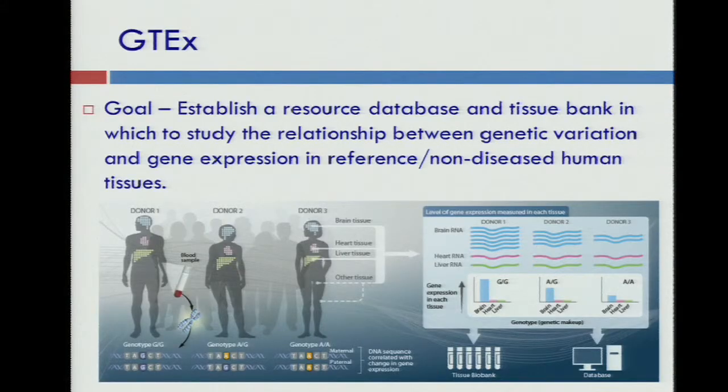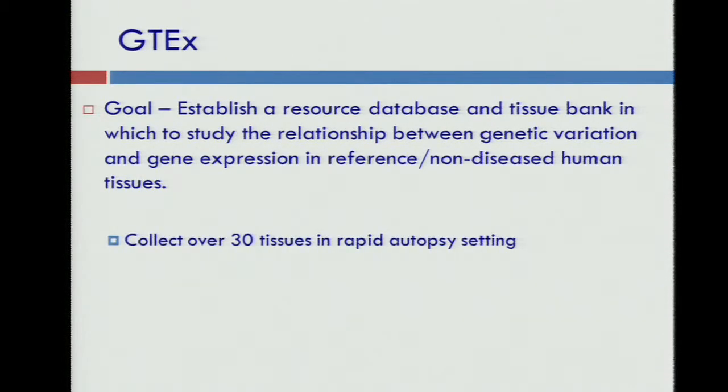We have a very engaged working group at NIH with members from different ICs. The goal of GTEx is to establish a resource database and tissue bank in which we study the relationship between genetic variation and gene expression in reference, non-diseased human tissues. Right now we are collecting over 30 tissues in a rapid autopsy setting, performing RNA sequencing on all samples of sufficient quality, and conducting high-density SNP genotyping with the Illumina 5M chip as well as an exome chip.